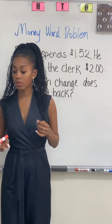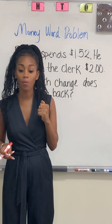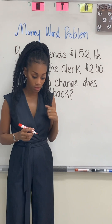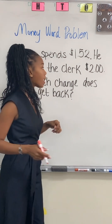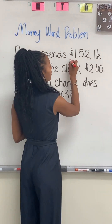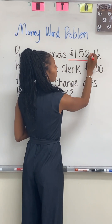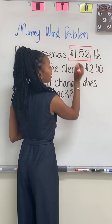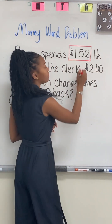When we are working with a word problem, what's the first thing that we need to look for? Our numbers — what numbers are we working with? We're working with $1.52. And what else? $2.